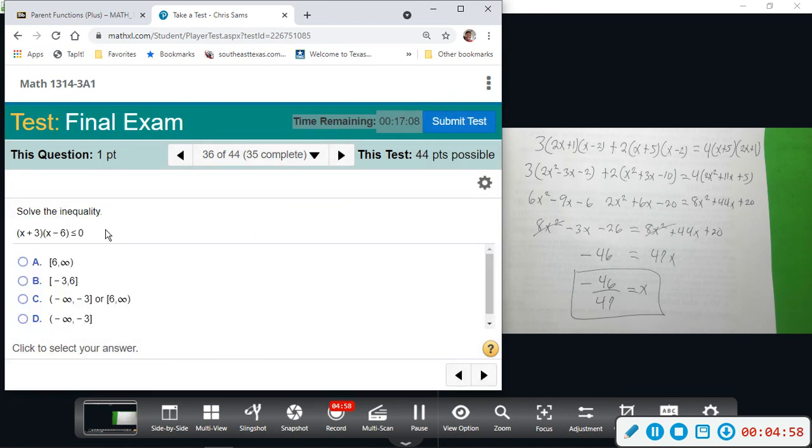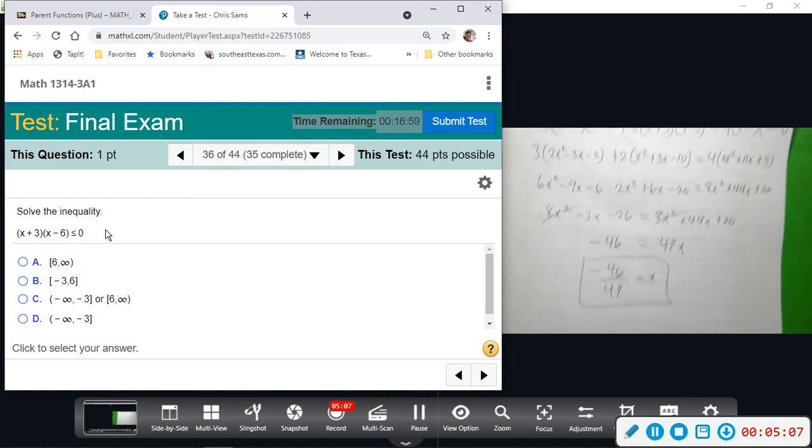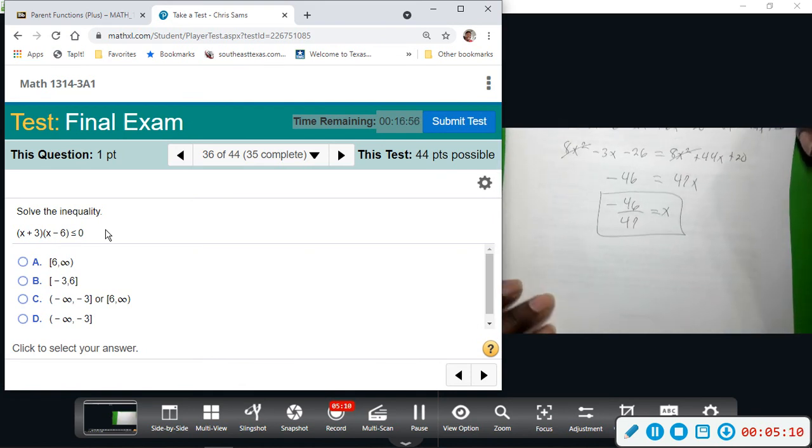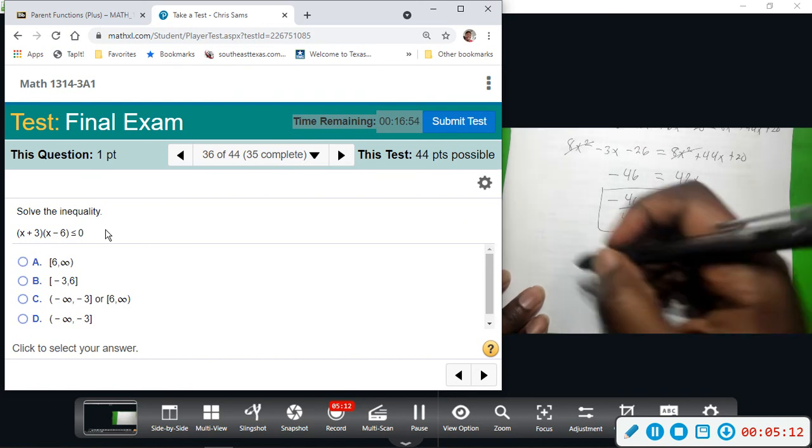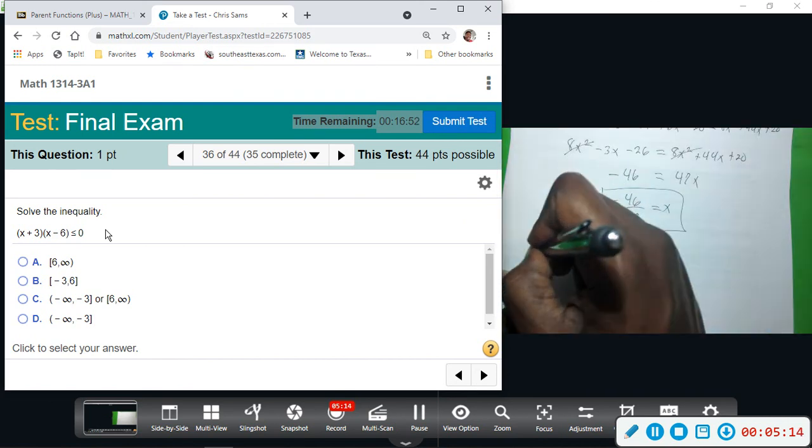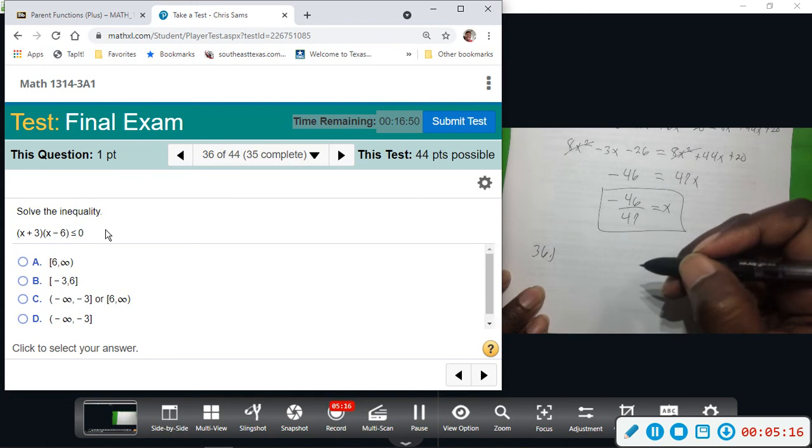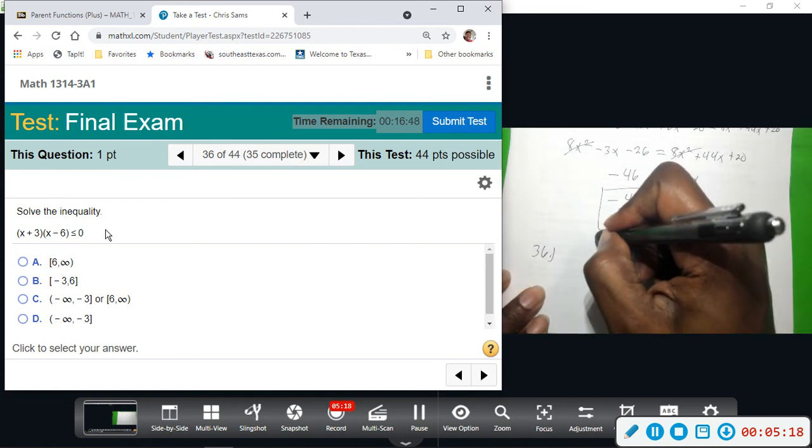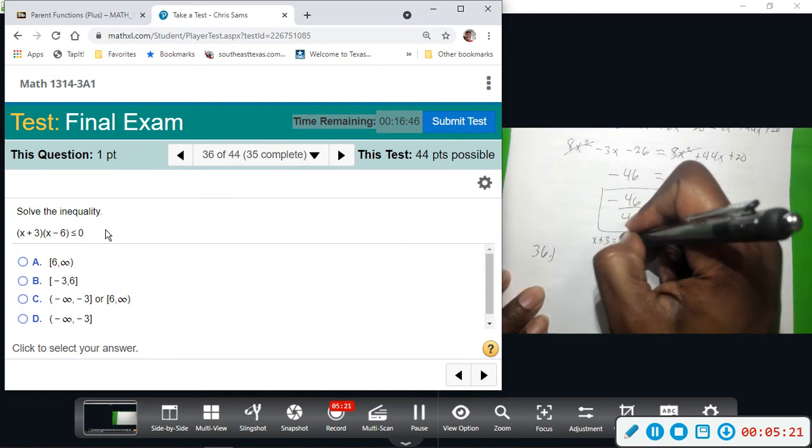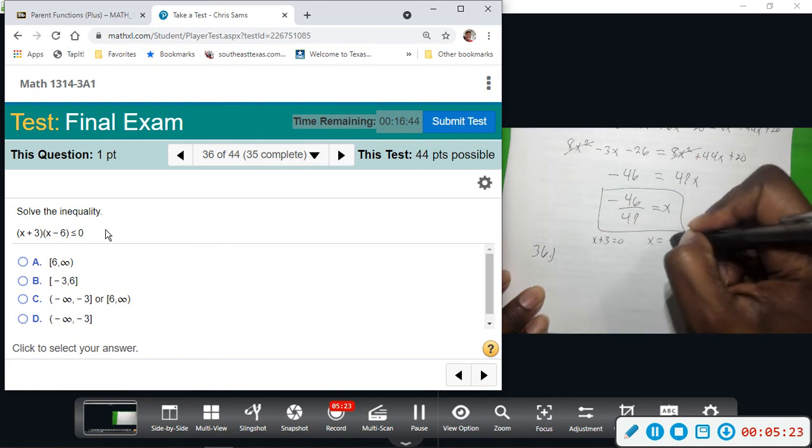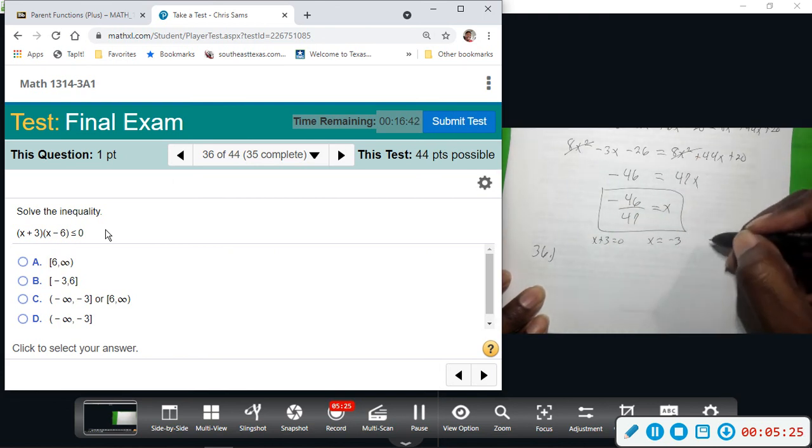This one wants us to solve the inequality. So the way we solve inequalities is we make a number line, and they already give us the critical values pretty much. And it's almost solved for us. We would do x plus 3 equals 0, so that would give us x equals negative 3. And then you do the same thing for x minus 6 equals 0, so that would give us x equals 6.